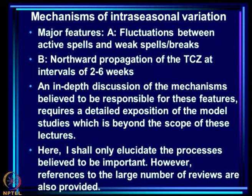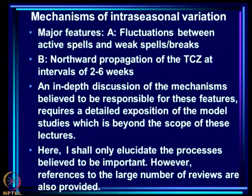Regarding the mechanisms of intra-seasonal variation, the major features over the Indian region are fluctuations between active spells and weak spells or breaks, and northward propagation of the TCG at intervals of 2 to 6 weeks.